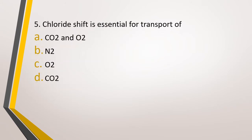Question number 5. Chloride shift is essential for transport of? Option A: Carbon dioxide and oxygen. Option B: Nitrogen. Option C: Oxygen. Option D: Carbon dioxide. The correct answer is option D, that is carbon dioxide.